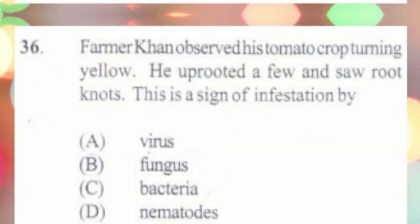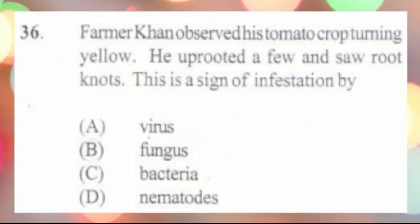Question number 36. A farmer can observe his tomato crops turning yellow. He uprooted a few and saw root knots. This is a sign of infestation by: A. Virus, B. Fungus, C. Bacteria, D. Nematodes. The answer is D, nematodes.